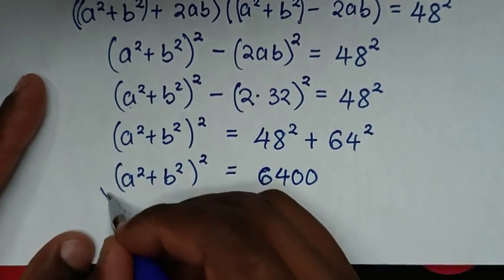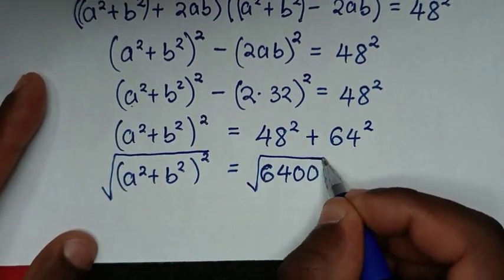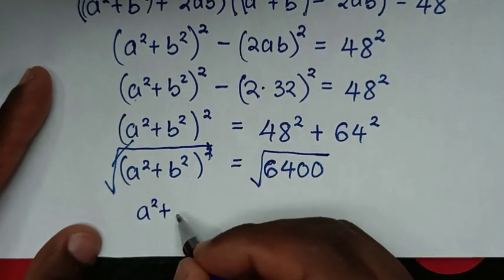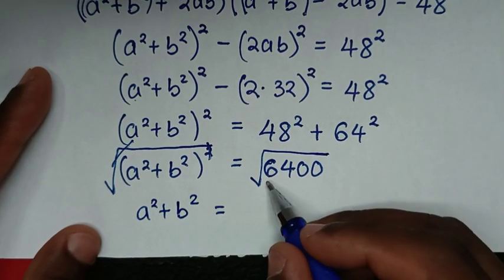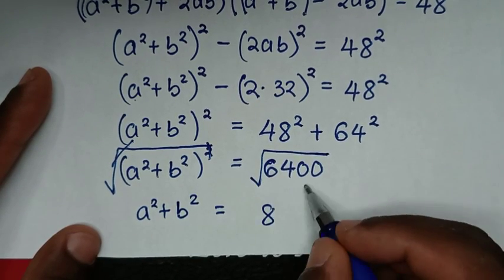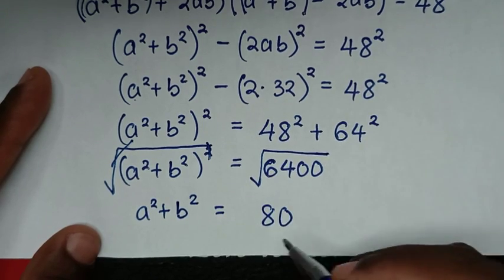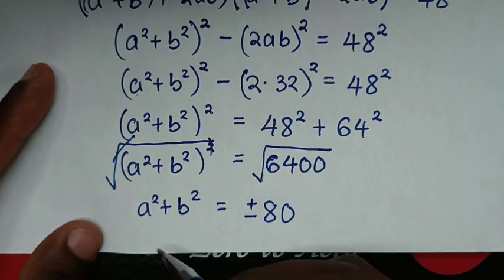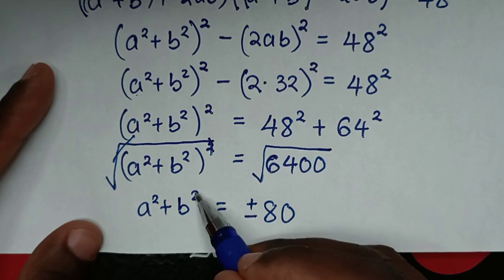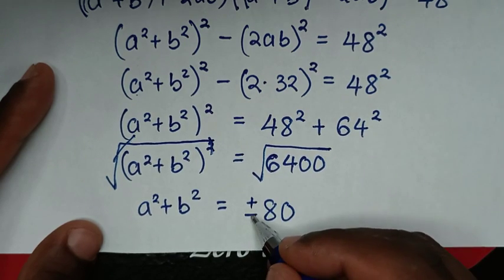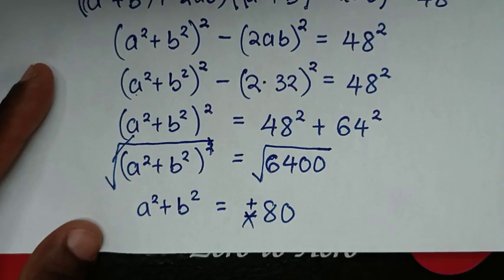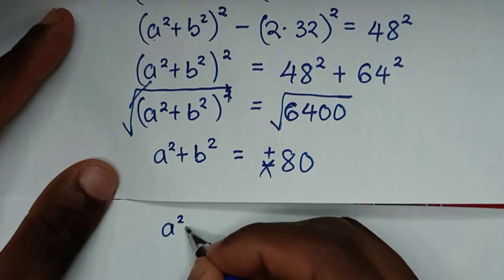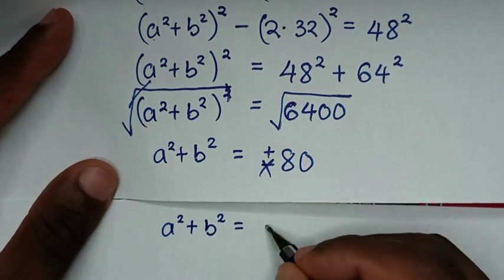Then in the next step, we apply square root on both sides. The square root cancels the square, so a squared plus b squared equals square root of 6400, which is plus or minus 80. Since a squared and b squared are both positive values, their sum must be positive, so we reject the negative value. Therefore a squared plus b squared equals 80.